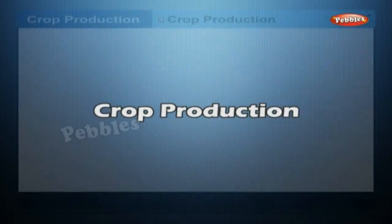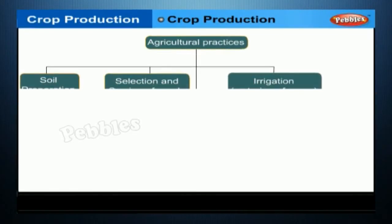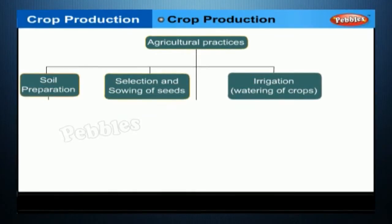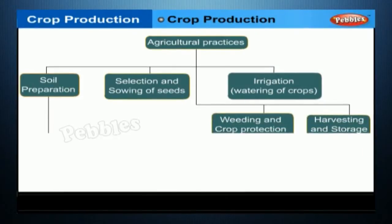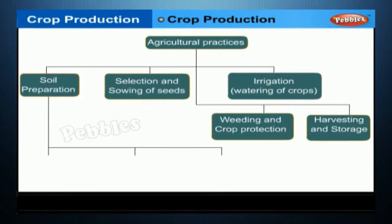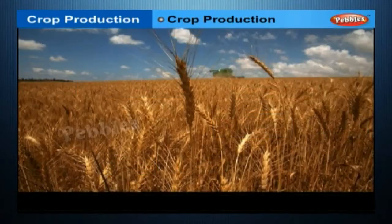To ensure a good crop yield, farmers carry out certain activities in a particular sequence till the crops mature at harvest. These activities are called agricultural practices. A sequential listing of agricultural practices is given in the flow chart shown on your screen.